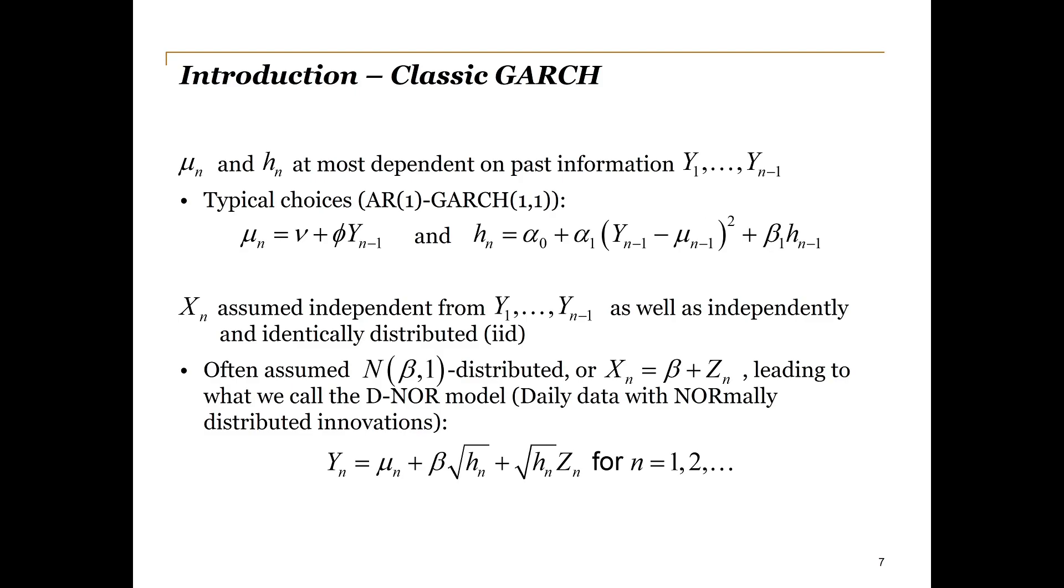As our base model, we will use the well-known configuration, where the innovations are assumed to be normally distributed with mean beta and unit variance. We indicate this by DNOR, since it utilizes daily log returns and assumes normally distributed innovations. Before we introduce the enhancements, a word on the tests we will utilize to check the goodness of fit.